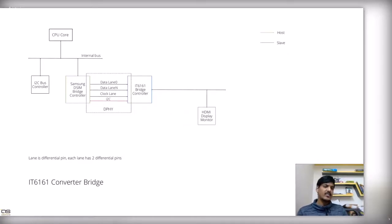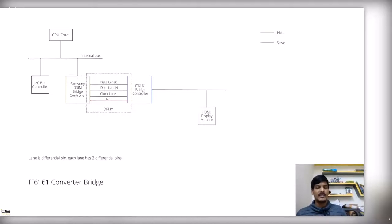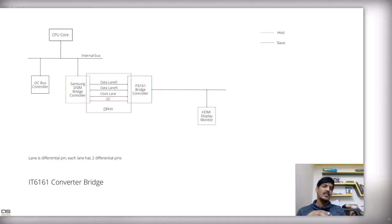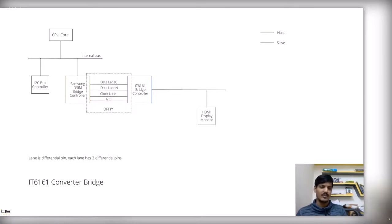This is the IT6161 converter bridge, where the host is a MIPI DSI host that sends data on the DSI bus. The IT6161 will convert the data to HDMI — it has an internal protocol standard layer where all the data lanes are converted to TMDS signals for the HDMI display monitor to process. This is one example of a converter bridge.